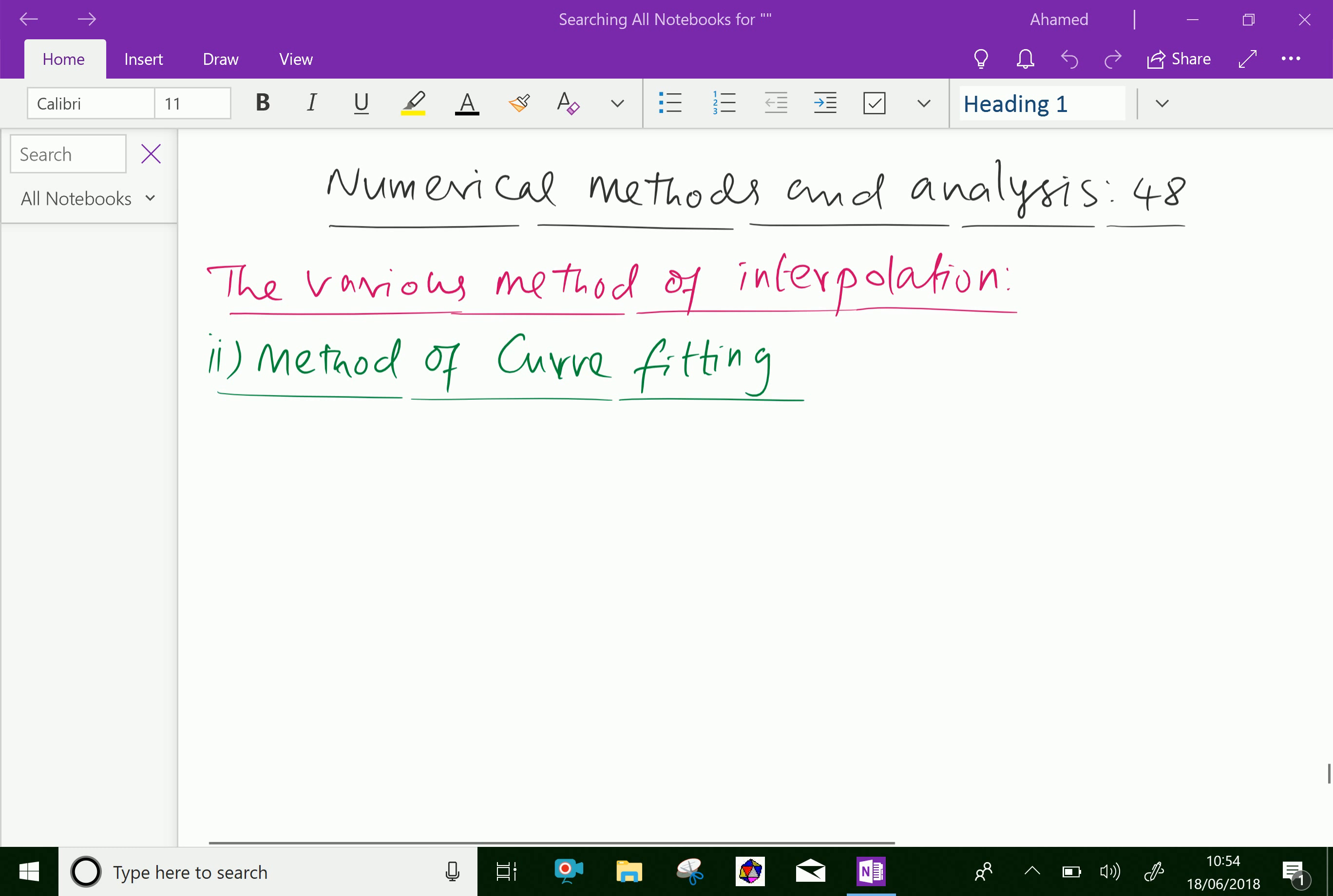This method has some drawbacks. First one, the form of function for the given set of observation is assumed to be known, means it is linear or quadratic or cubic functions like that. Then when some additional observations are included in the data, then the calculation for finding the unknown constants are to be done one more time. Next one, the method is not exact. The method is complicated when the number of observation is sufficiently large. The only merit of this method lies in its closer approximation than the graphical method.